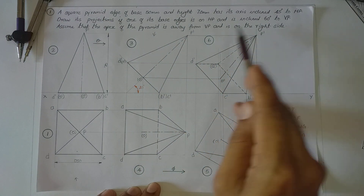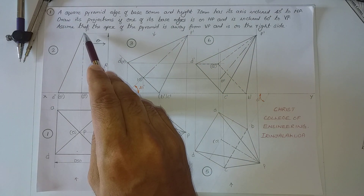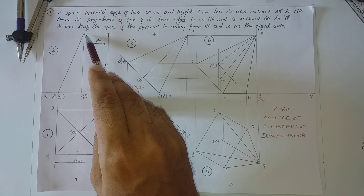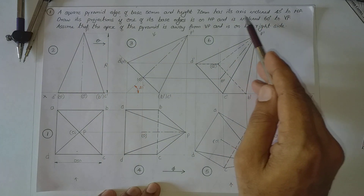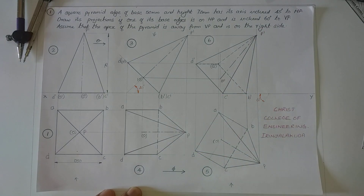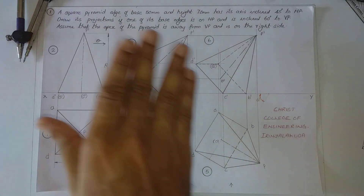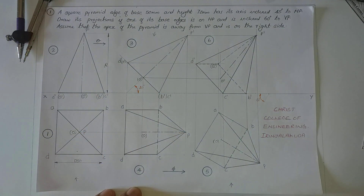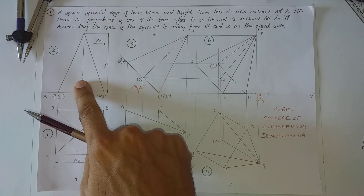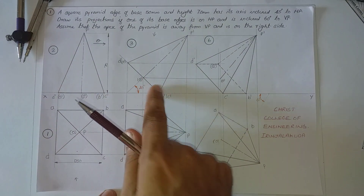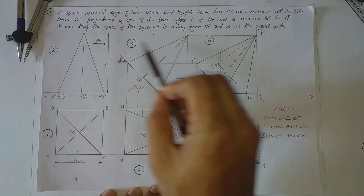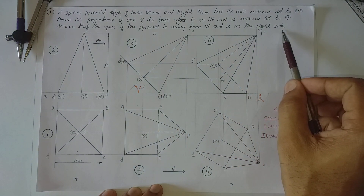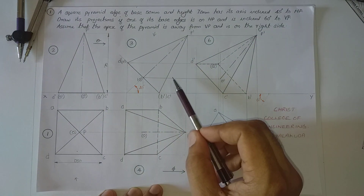The question states: assume that the apex of the pyramid is away from VP and is on the right hand side. This is the apex. In order to give an inclination of 45 degrees to HP for the axis, we can tilt it either to the left hand side or to the right hand side. I have tilted the solid to the right hand side because it is specifically mentioned in the question that the apex is on the right hand side.